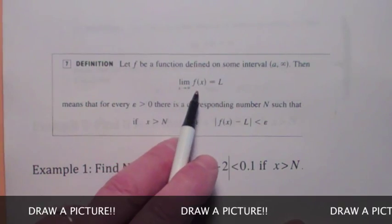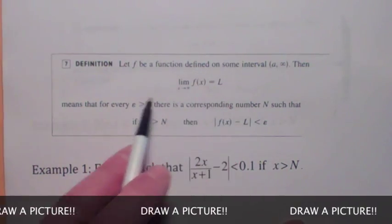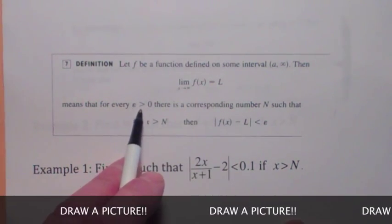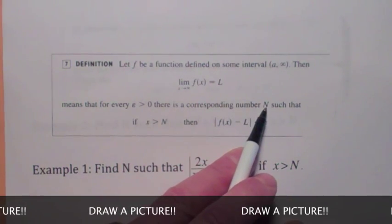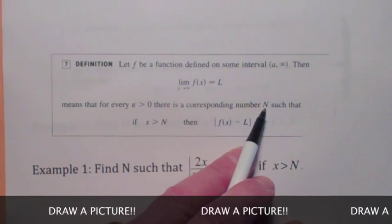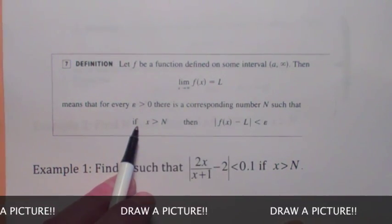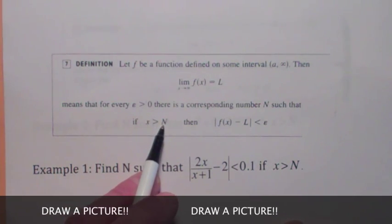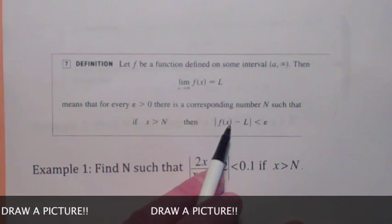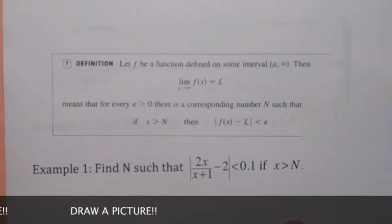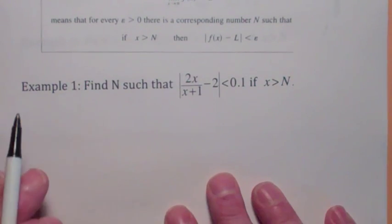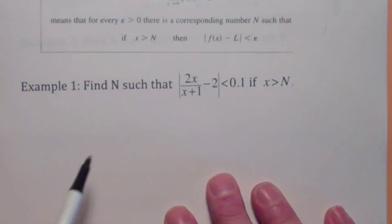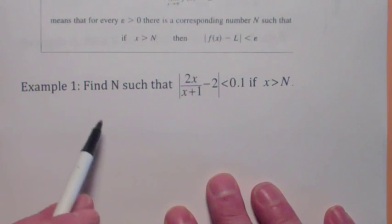The limit as x goes to infinity of f(x) equals L means: no matter how close to L you want to make it, you can do that by finding a cutoff value N on the x-axis, so that if x is beyond that cutoff value, the y values will be within epsilon of L. You should know that definition and be able to demonstrate it.